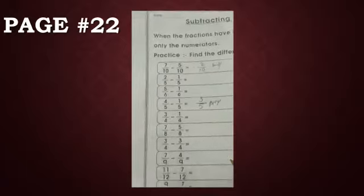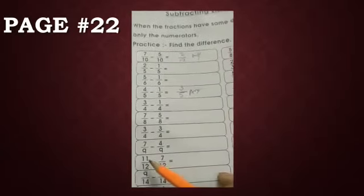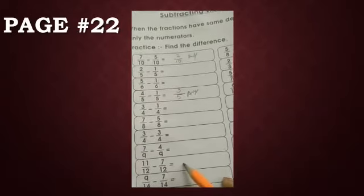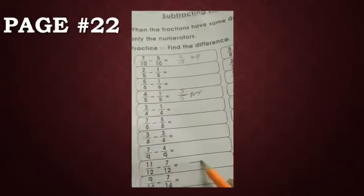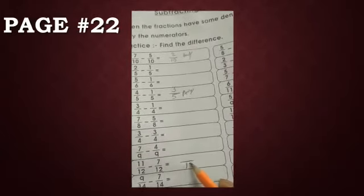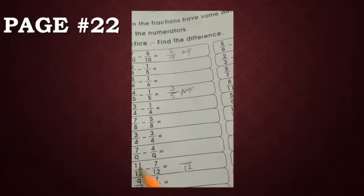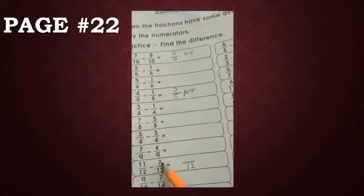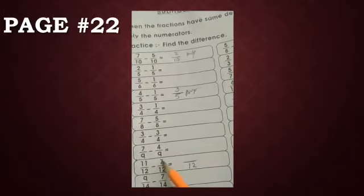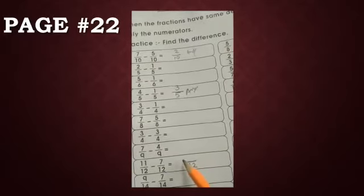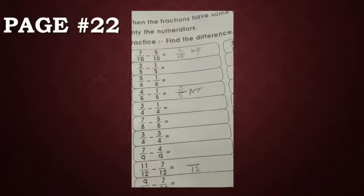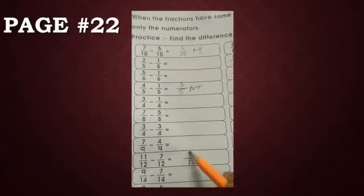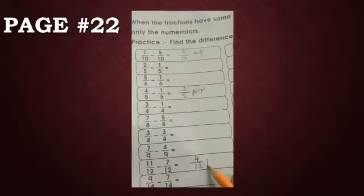Now move further: 11 upon 12 minus 7 upon 12. These are like fractions, so 12 stays as the denominator. Count up from the smaller number — 8, 9, 10, 11 — that gives 4. Write 4 over there. This is your answer.